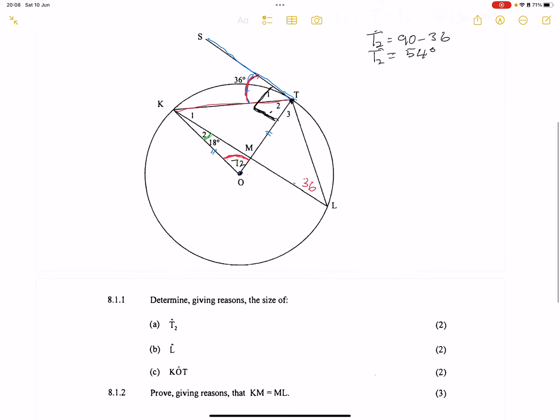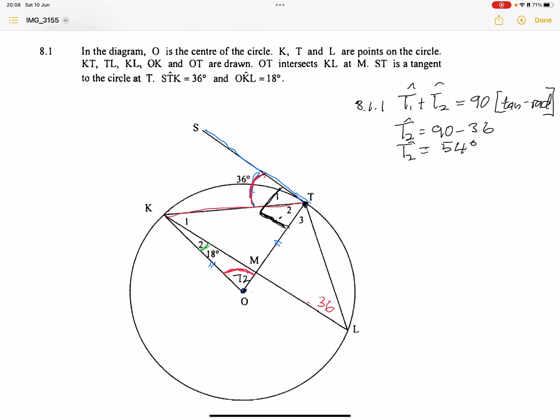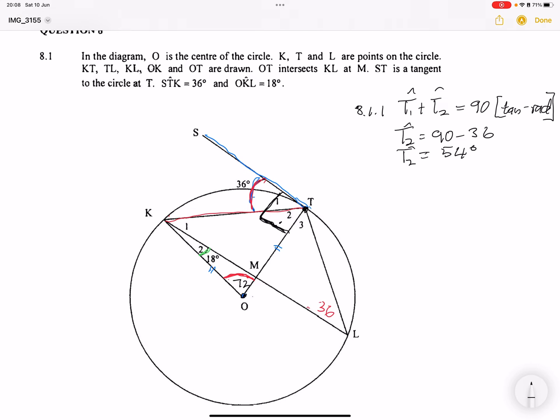Now let's go to the next one. We're looking for angle L. For 8.1.2, we know that angle L should be equal to T1, which is equal to 36 degrees. And what is the reason? What should be the reason there? That's the tan-chord theorem. So we know that through the tan-chord theorem, those two angles are exactly equal.